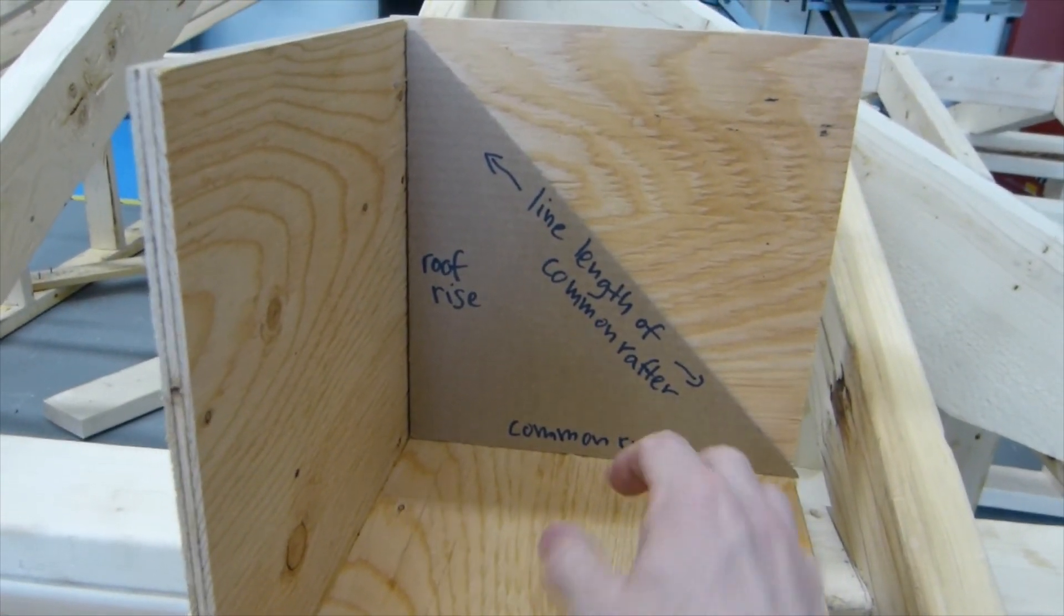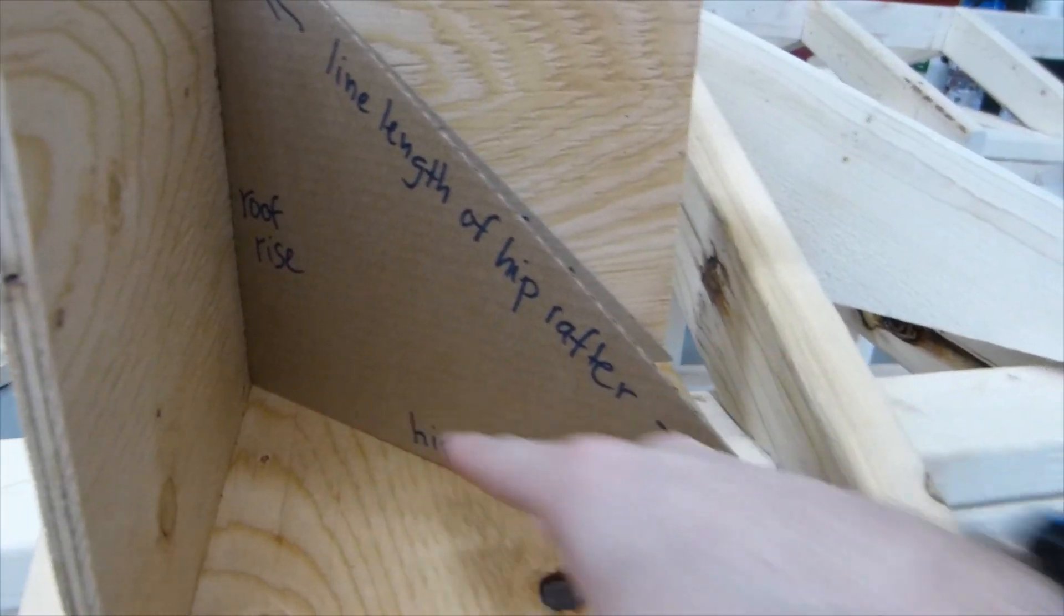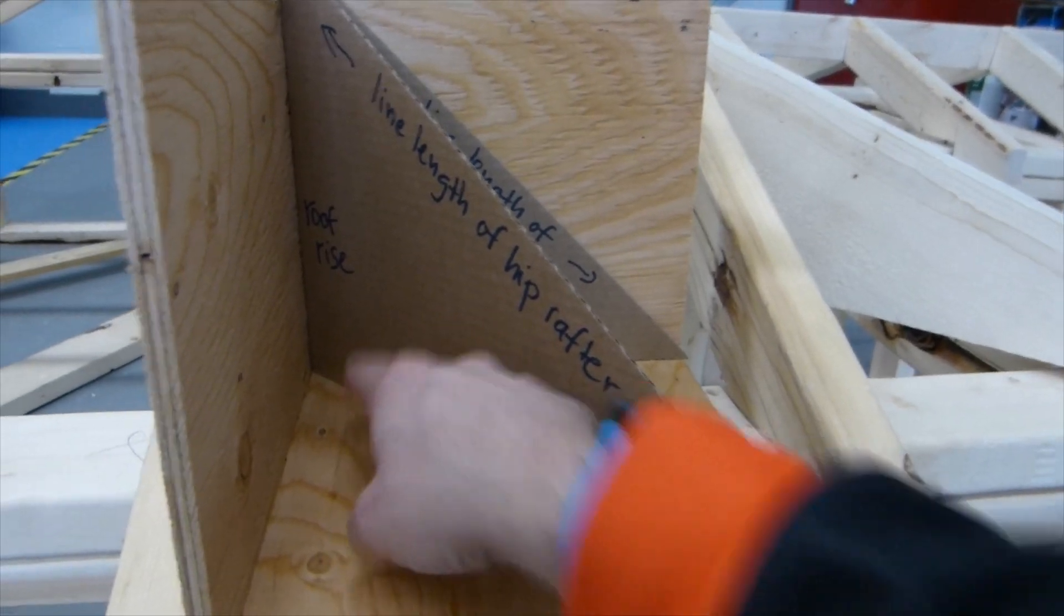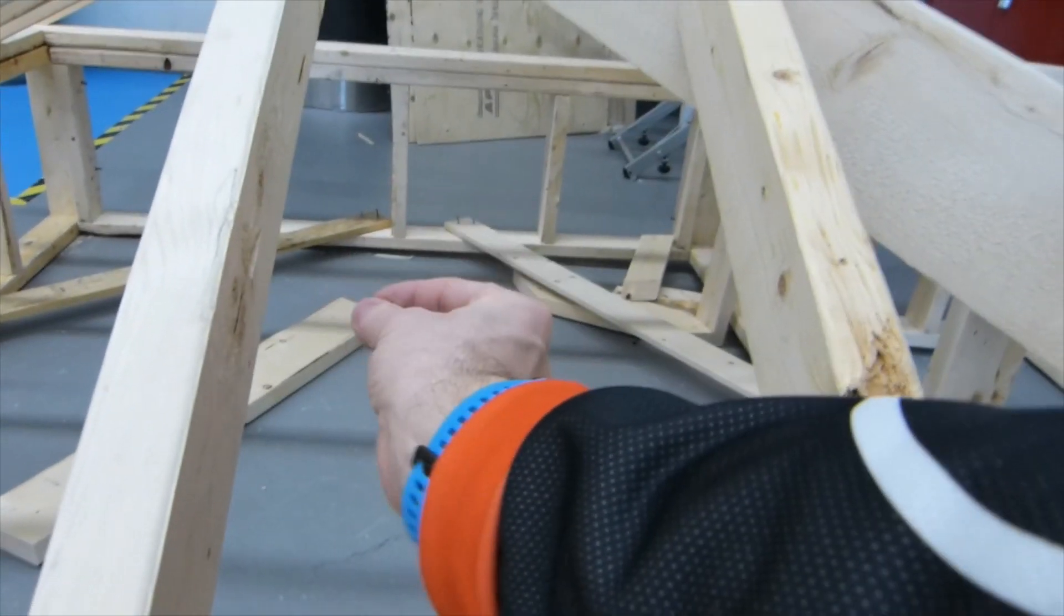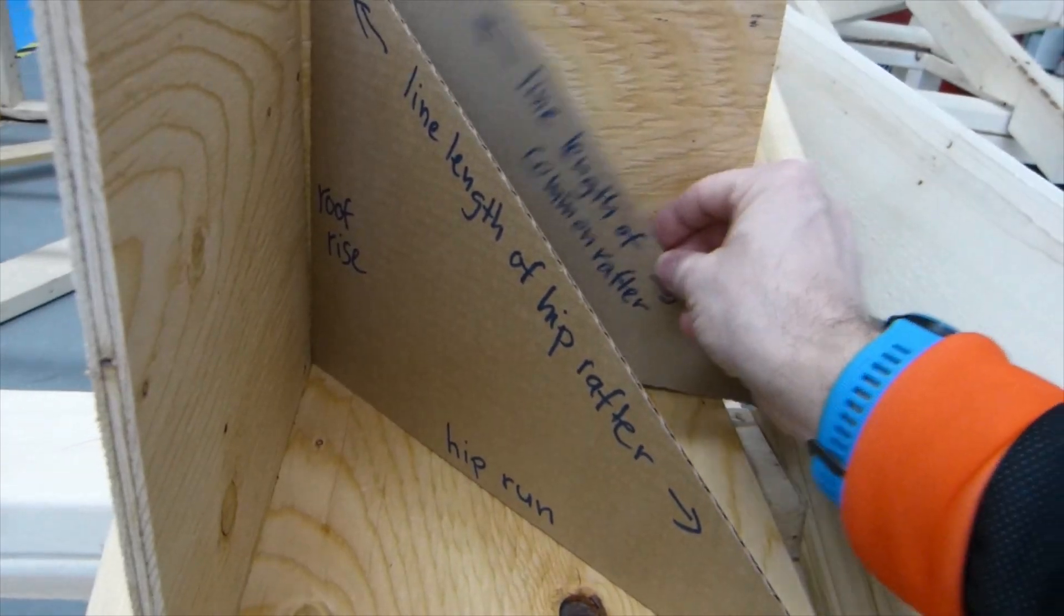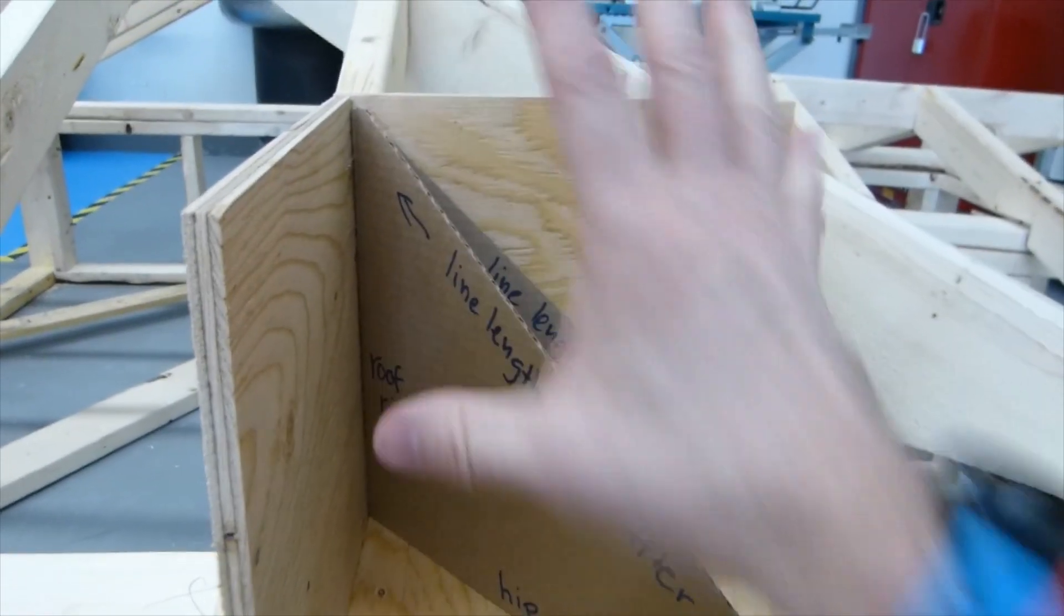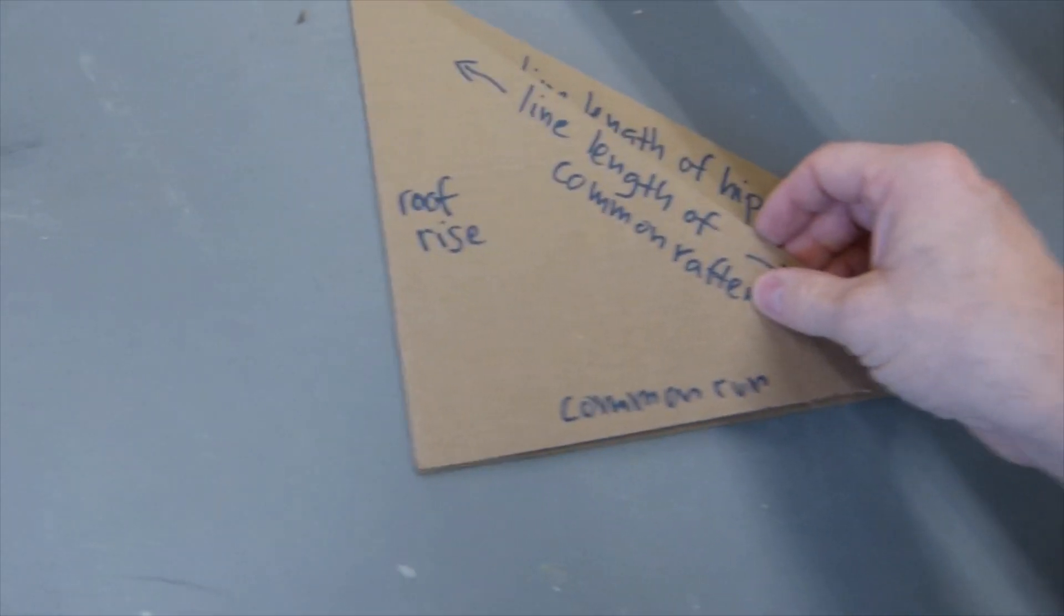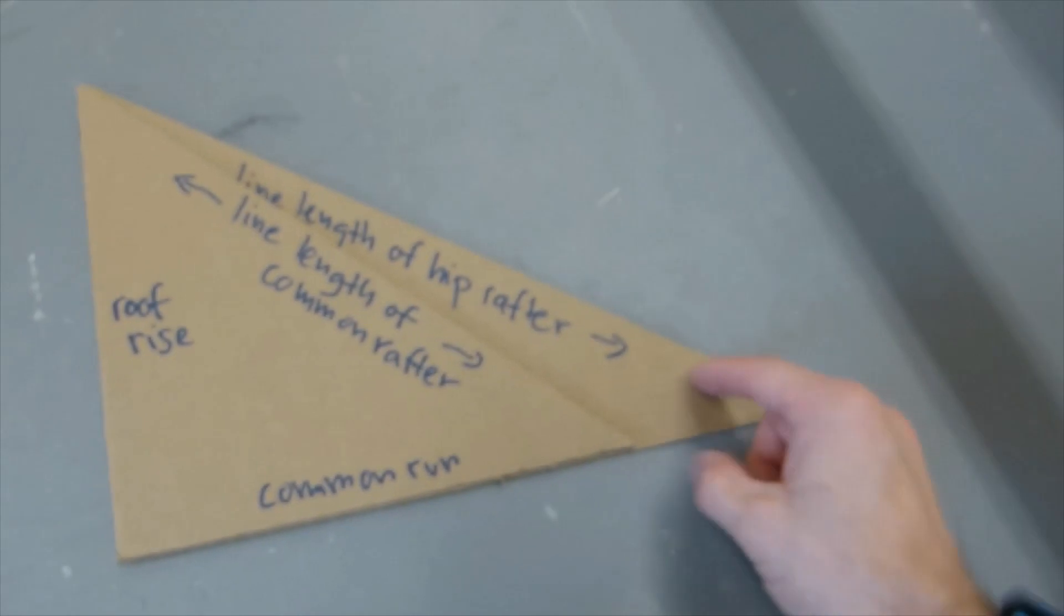Now, on a common rafter, the common rafters run is half the length of the building, but a hip rafters run is longer. There. It's here. It comes from this corner here, runs in the air to a point mid-air, somewhere thereabouts. And then both the common rafters, represented by this cardboard triangle there, and the hip rafters, they both rise to the same height there on the ridge. If you put these two cardboard side by side, or overlap them like so, you can see that they rise to the same height, but the common rafters run is just longer.